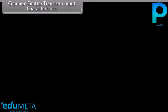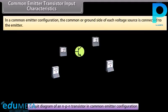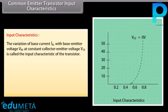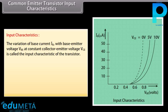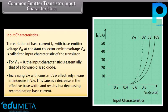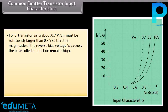In a common emitter configuration, the common or ground side of each voltage source is connected to the emitter. The input characteristic is the variation of base current IB with base-emitter voltage VBE at constant collector-emitter voltage VCE. For VCE = 0, the input characteristic is essentially that of a forward biased diode. Increasing VCE at constant VBE effectively increases VCB, decreasing the effective base width and reducing recombination base current. For a silicon transistor, VBE is about 0.7V.